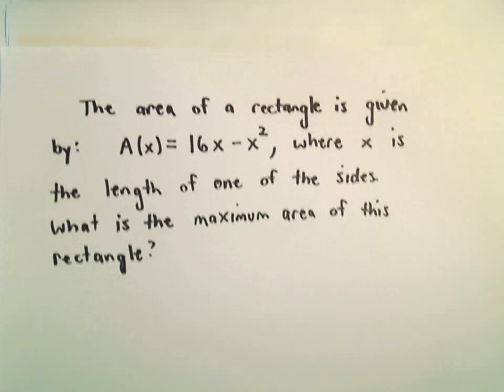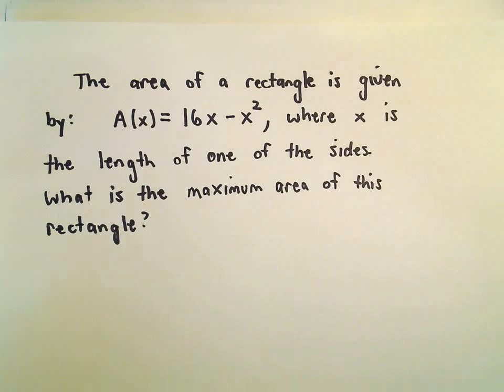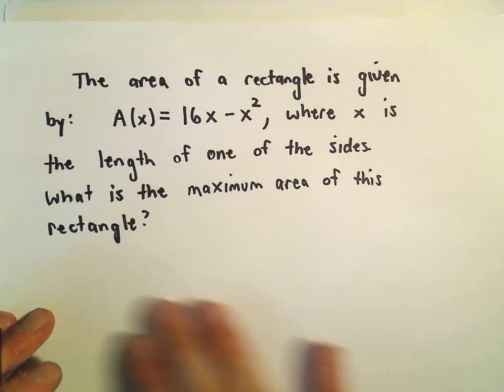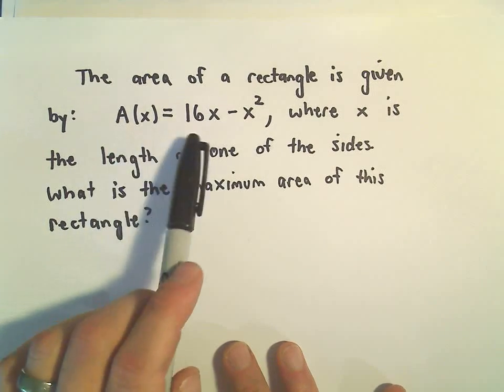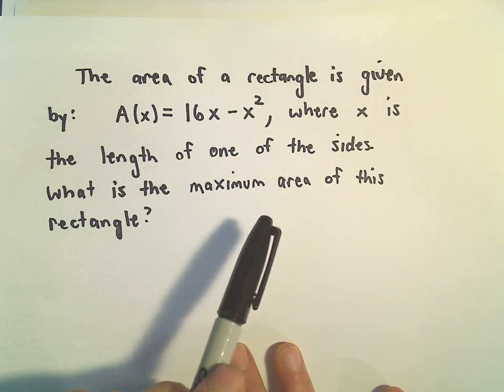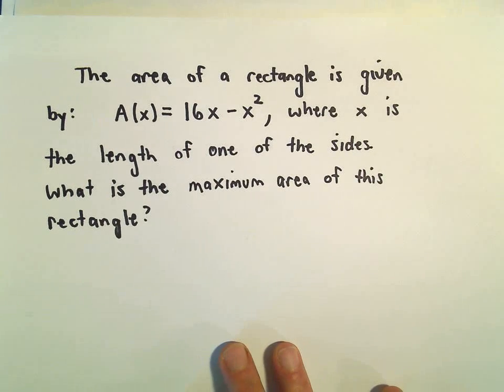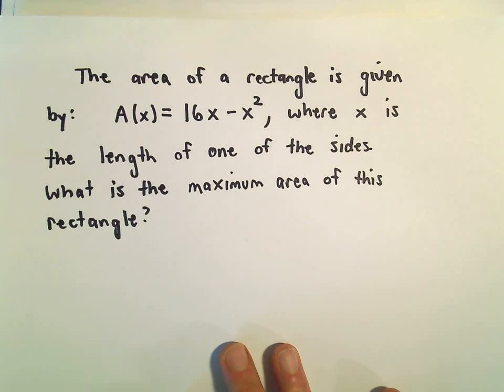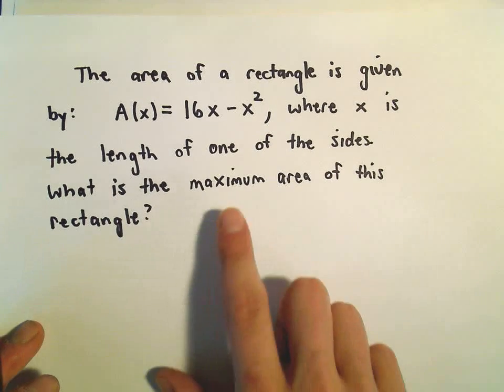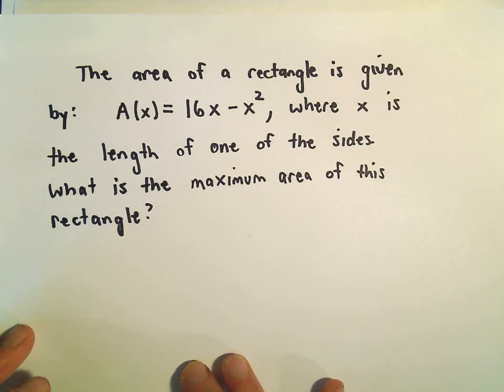Okay, so another little maximization problem here, and here we're going to maximize the area of a rectangle. So suppose the area of a rectangle is given by A(x) = 16x - x², where x is the length of one of the sides. So we're kind of given the final formula for the area. We want to know what's the maximum area of this rectangle.